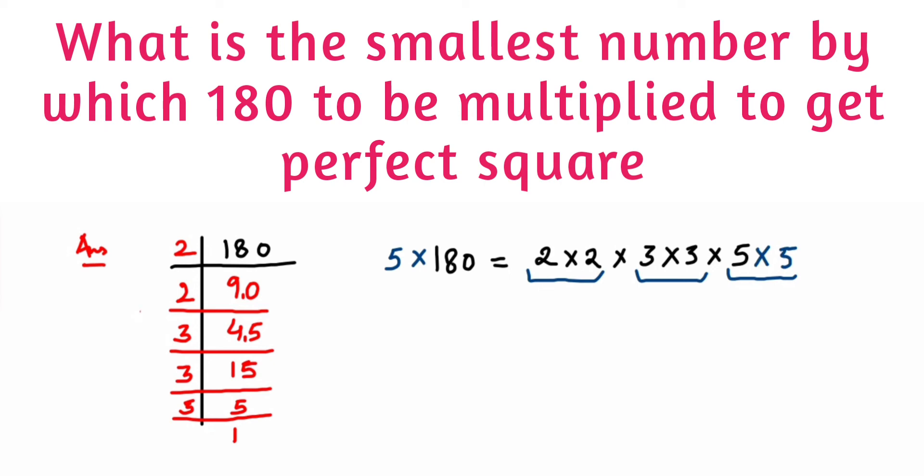180 times 5 is 900. So 900 equals—I'm going to rewrite once again—2 × 2 × 3 × 3 × 5 × 5.